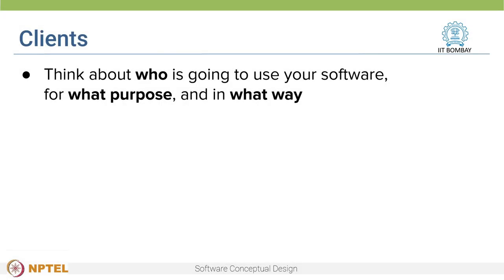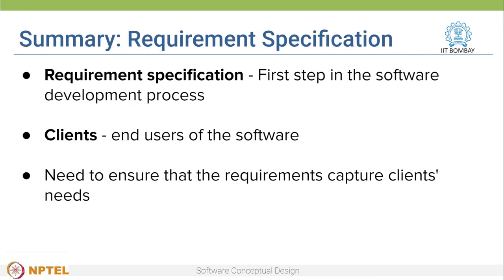So, think about who is going to use your software, for what purpose and in what way. The persona of the intended user — that is, the client — must be alive in your mind as you think about who you are creating the software for. To summarize, the first step in the software development process is to gather requirements. The requirements need to be gathered from the end users of the software, who are usually called clients, and we need to ensure that the requirements capture the needs of the client.